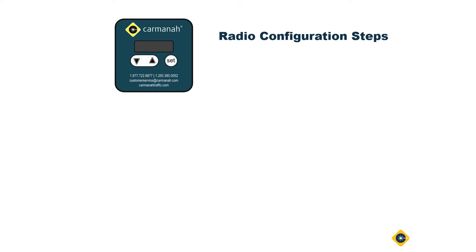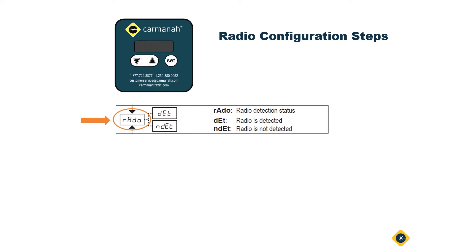If you happen to be working with a system that was not factory configured, or if you're on-site doing troubleshooting, there are a couple of steps you can go through to help you get up and running. Using the onboard user interface and the up or down arrow keys, scroll to the following menu items.